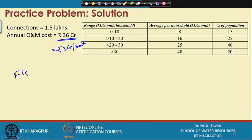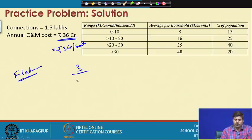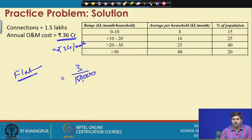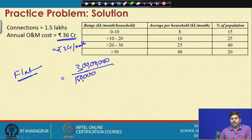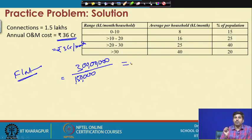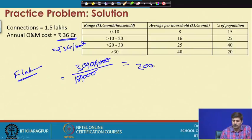Let us start with the flat pricing system. For a flat price model it is fairly easy — you know you need to recover 3 crore rupees in a month from 1.5 lakh customers. You divide 3 crore by 1.5 lakh and, cancelling zeros, you get 200 rupees per month per connection.